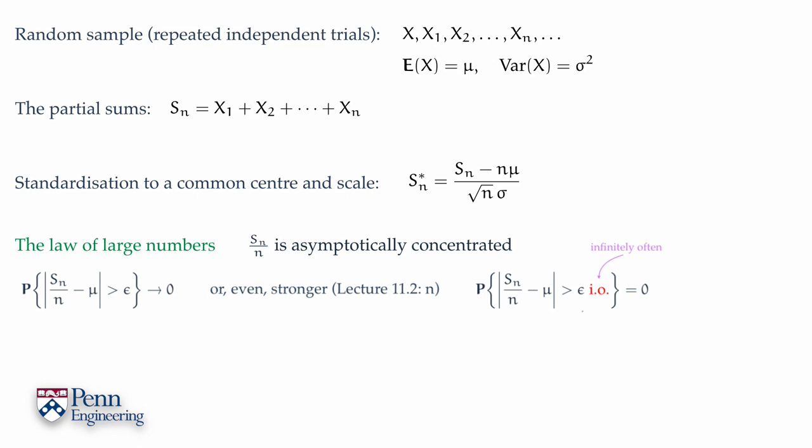Another way of saying this is that viewed as a sequence of sample means, S₁ over 1, S₂ over 2, S₃ over 3, Sₙ over n, these sequences converge with probability 1 to the expected value. So here's a powerful notion of concentration.